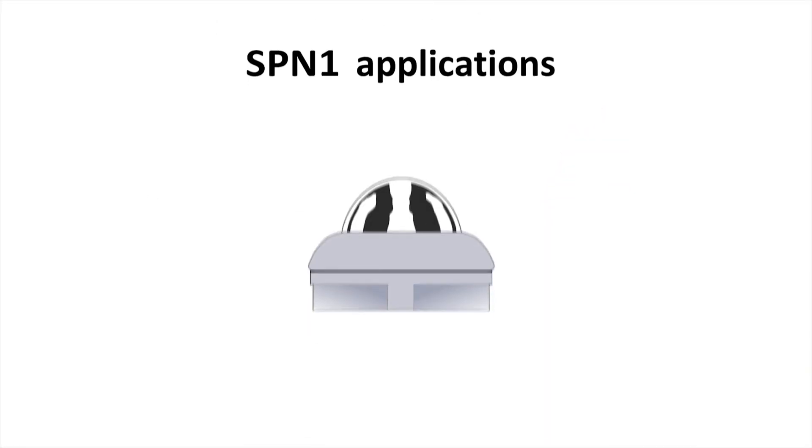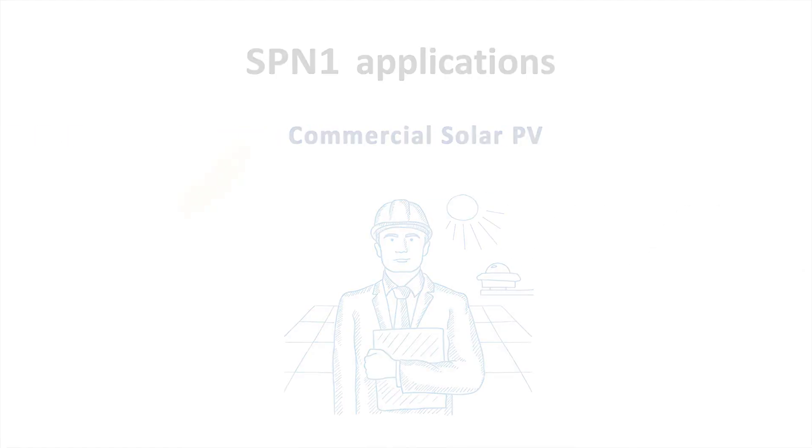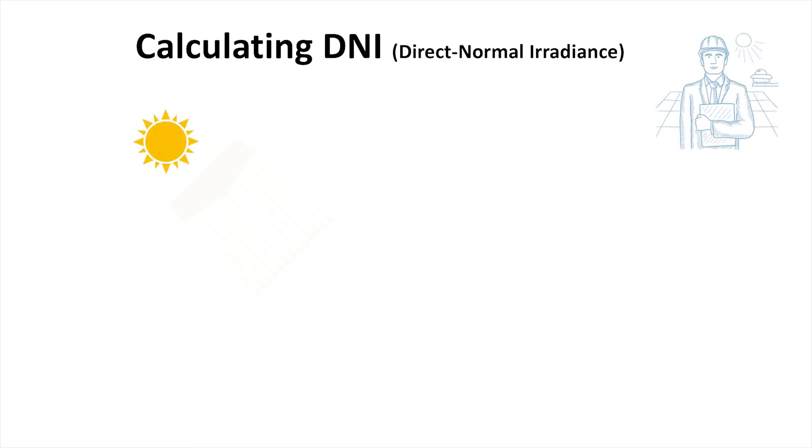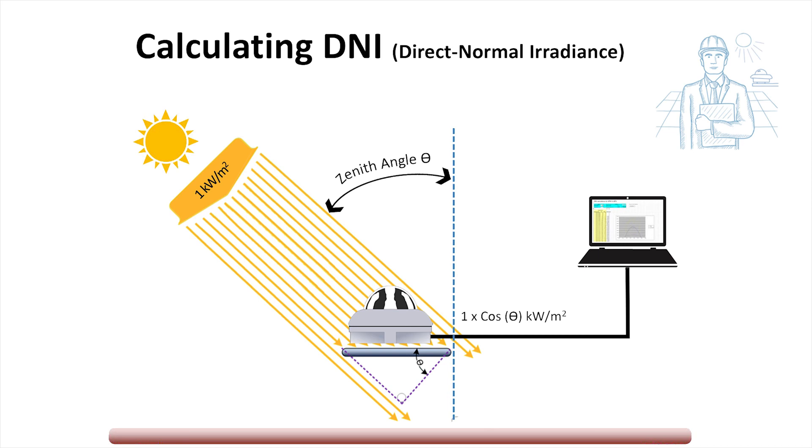The SPN1 has a wide range of uses. Let's look first at commercial solar PV. To compare solar panel efficiency to DNI, it's common practice to use expensive mechanical equipment that tracks the sun. The SPN1 calculates DNI without the mechanical complexity and at lower cost.